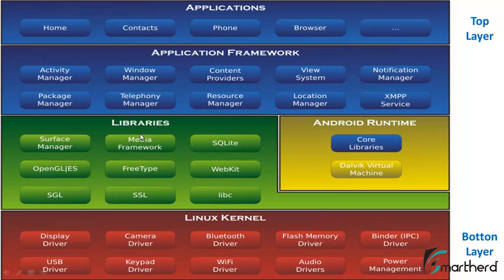Then comes the libraries layer, another very important layer which provides SQL database for the applications, web browser kit, SSL, SGL, and OpenGL. OpenGL actually helps you to add 2D or 3D animation, like Android games use. Then comes the application framework, which provides high-level services to our applications in the form of Java classes. It includes predefined classes useful for applications at the top, like content providers, window manager, and activity manager — all of which I will discuss during the development tutorials.